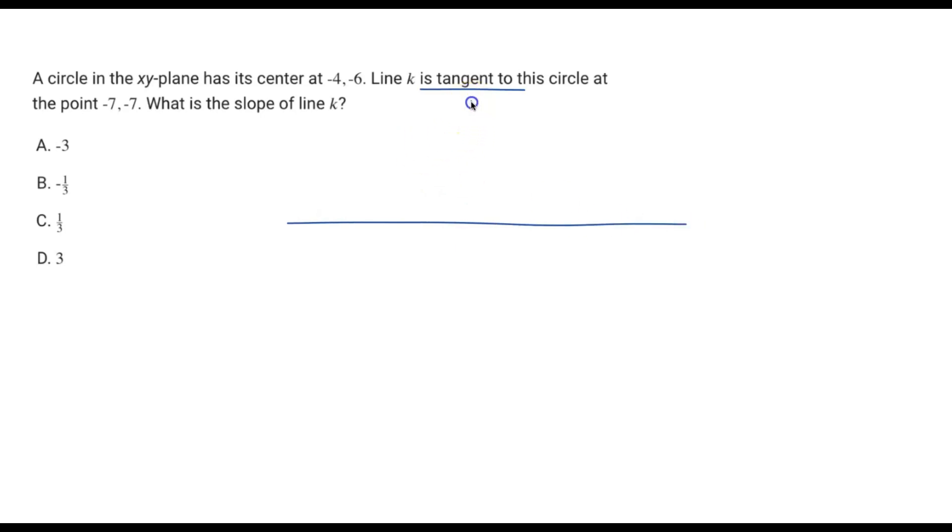If we draw the coordinate plane here, we know that the circle has its center at coordinates (-4, -6), so it's going to be somewhere like right here. We don't actually know the radius of the circle. We probably could calculate it using these points and finding the distance, but that's not really relevant for our problem and you'll see why.